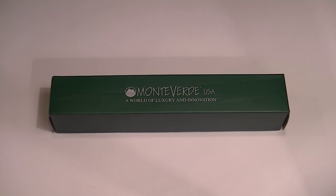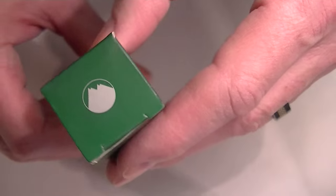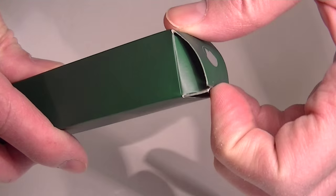This is the Monteverde Tool 60 Ballpoint Pen. It comes in a small green cardboard box. It has the Monteverde logo on the side of the box as well as on both ends of the box.